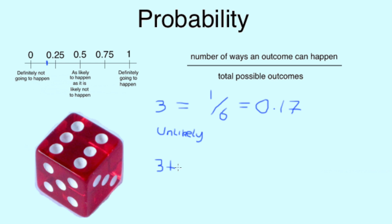If, however, we wanted to roll more than a 3, we have the numbers 4, 5 and 6 that are possible outcomes. So, the number of ways that could happen are 3 because there are 3 different numbers and the total possible outcomes are still 6 because there are still 6 faces on the dice. So, 3 out of 6, which is the same as 1 out of 2, which is the same as 0.5. So, therefore, it's as likely to happen as it is likely not to happen.